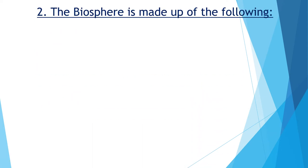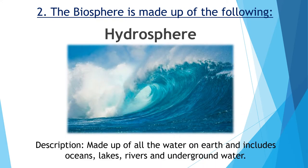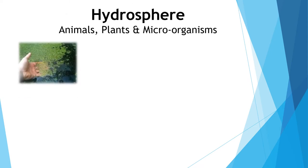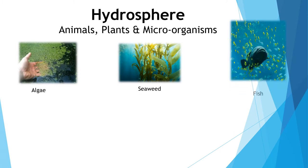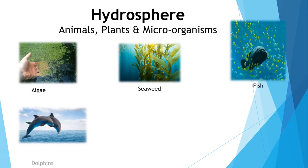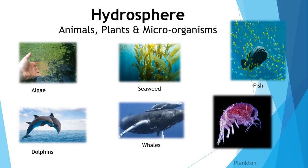The Biosphere is also made up of the Hydrosphere. The Hydrosphere is made up of all the water on Earth and includes oceans, lakes, rivers and underground water. Within the Hydrosphere we find plants such as algae and seaweed, various species of fish, mammals such as dolphins and whales, and lastly microorganisms such as plankton.